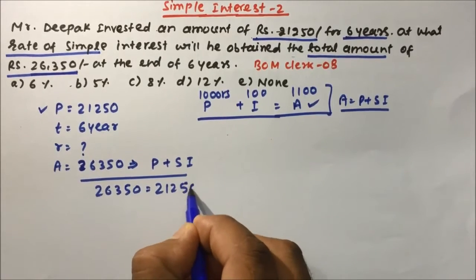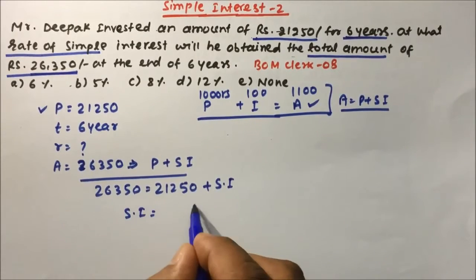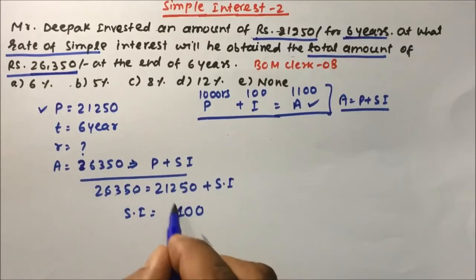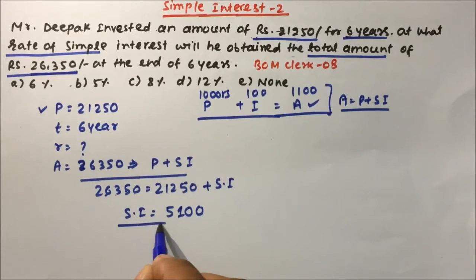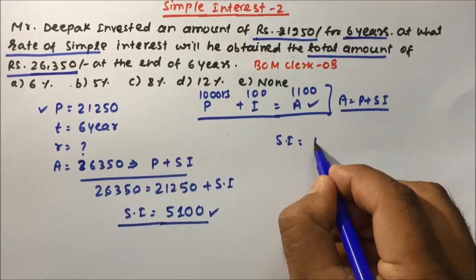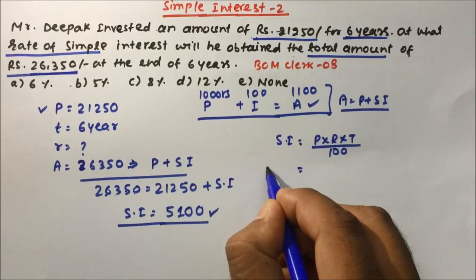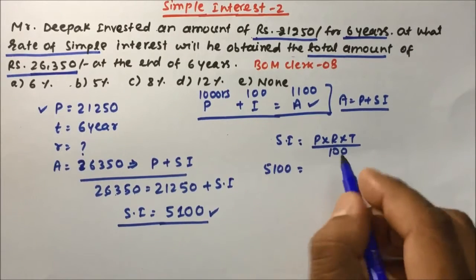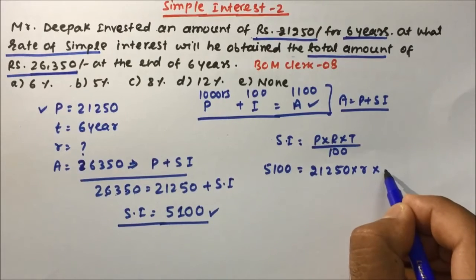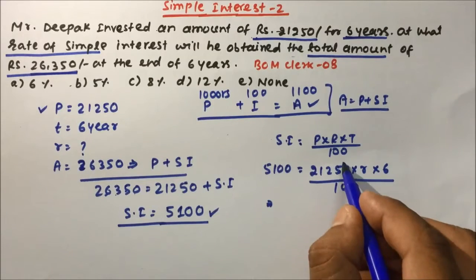So simple interest becomes 26,350 minus 21,250, which equals 5,100. Now we know the formula: Simple Interest = (P × R × T) / 100. So 5,100 = (21,250 × R × 6) / 100. We have to calculate the rate R.